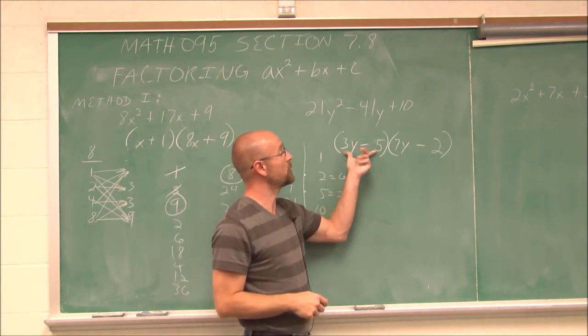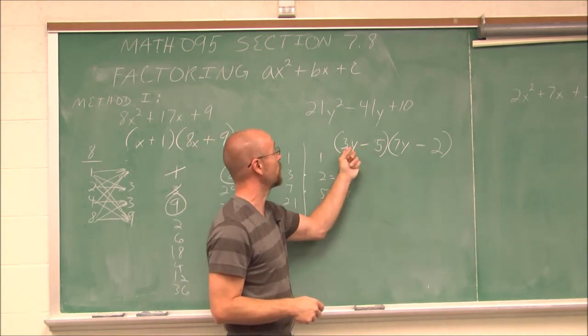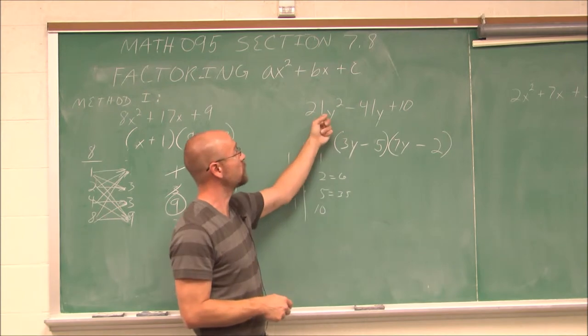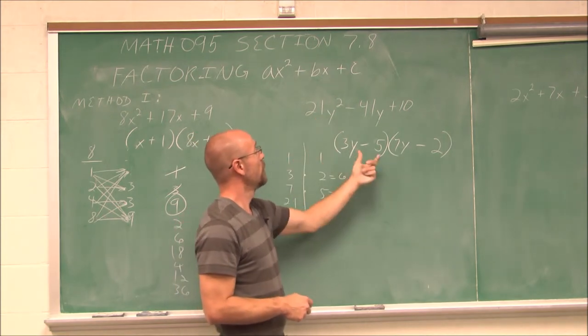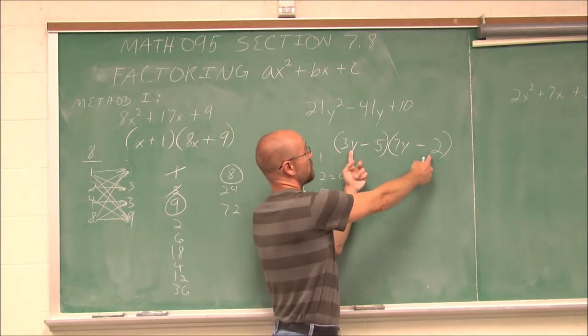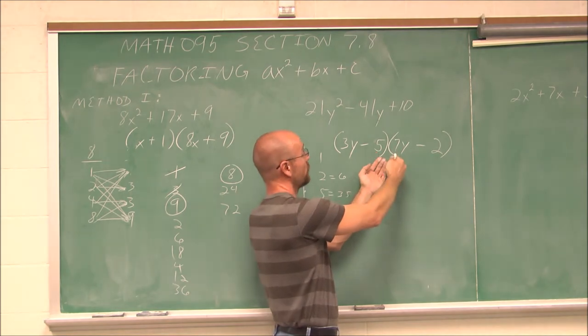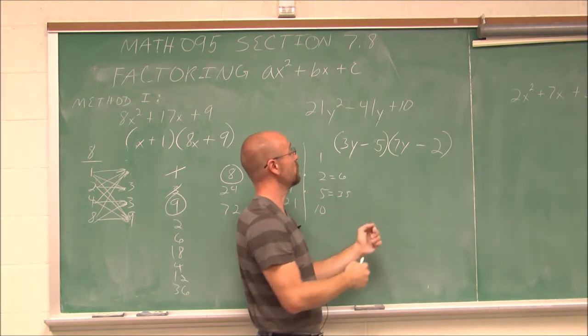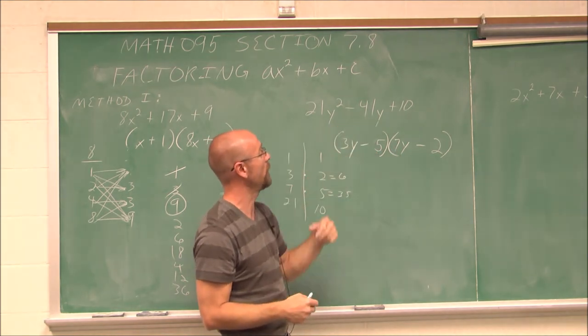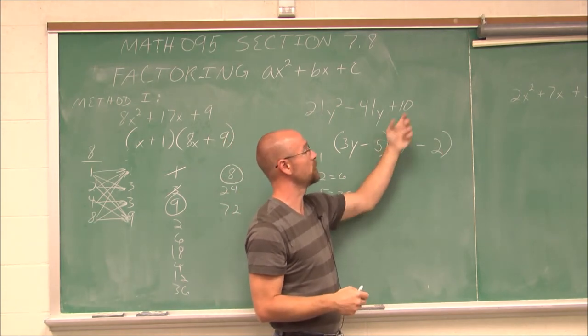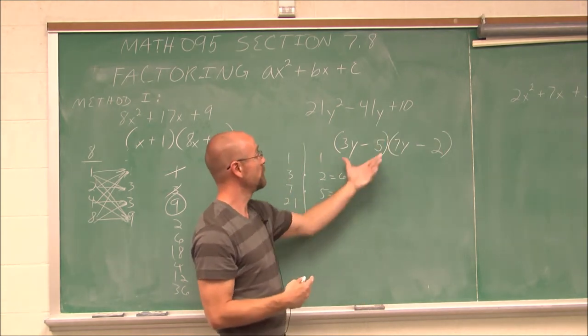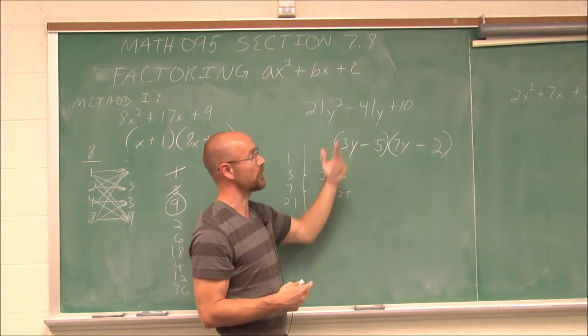All right, so I can check my work by multiplying this out. 3y times 7y is 21y squared. 3y times negative 2 is negative 6y. Negative 5 and 7y is negative 35y. 35 and 6 would be negative 41y's. And negative 5 times negative 2 is 10. So we could use FOIL to figure out that, yep, this is factored correctly.